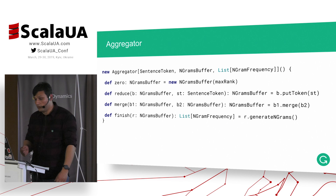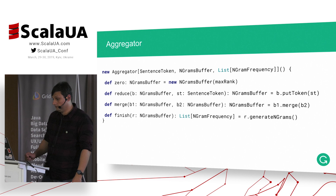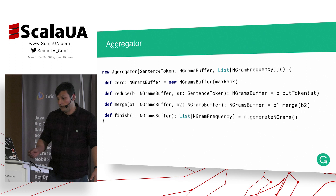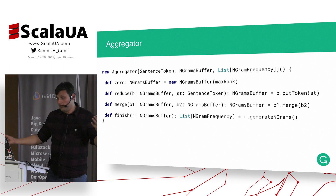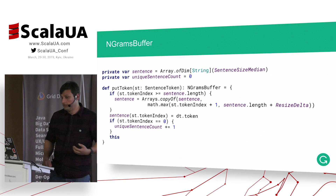The aggregator is pretty trivial. You get what we call an n-gram buffer, put tokens into it, then merge, and on finish we generate n-grams from it — so in this way we just collect the sentence and generate n-grams.